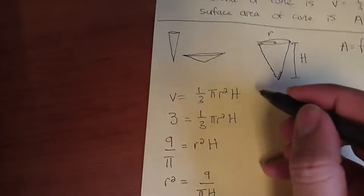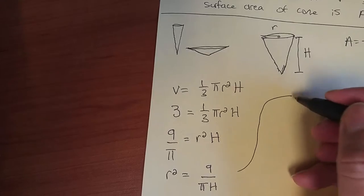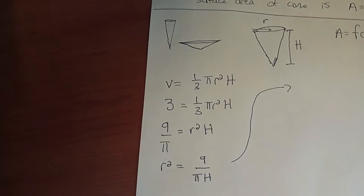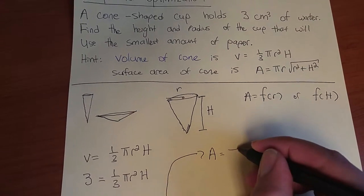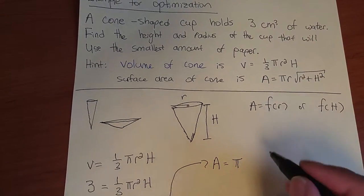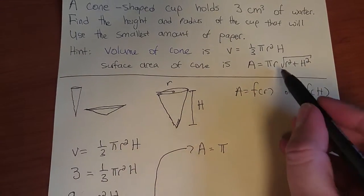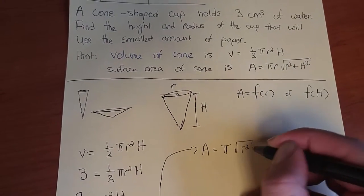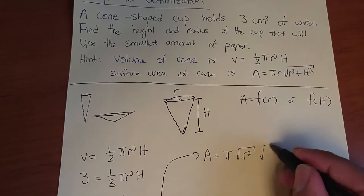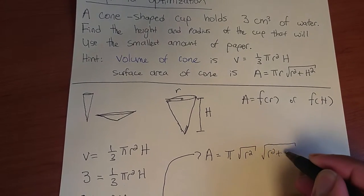Now we're going to rewrite our area formula with that. We get a formula in terms of just h. So A = π times—well before we do that, let's rewrite this r as the square root of r². And we have √(r² + h²).